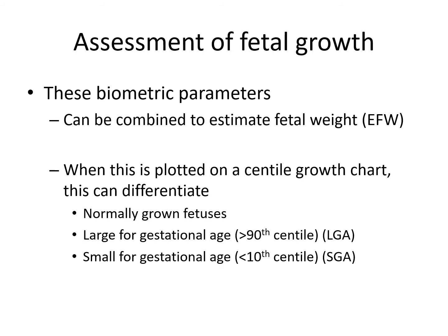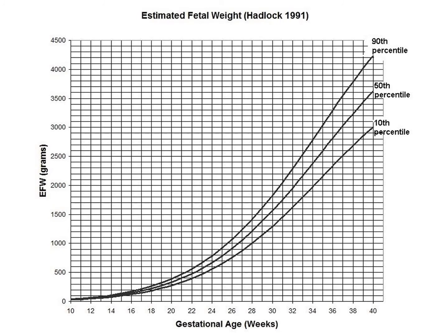The four biometric parameters in combination give an estimated fetal weight which can be expressed as percentiles. A fetus above the 90th centile is large for gestational age, and a fetus below the 10th centile is small for gestational age. This chart demonstrates Hadlock estimated fetal weight in grams plotted against gestational age on the x-axis, with the 10th and 90th centiles marking the boundaries of appropriate size.